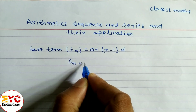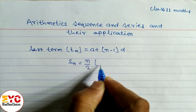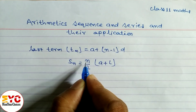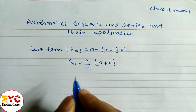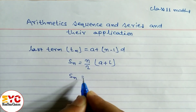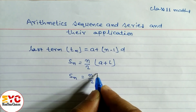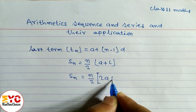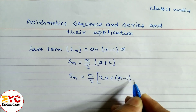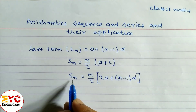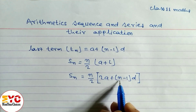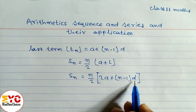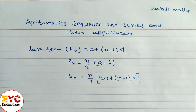After that, the Sn formula — sum of n terms — we have two formulas. First: Sn = n/2 × (a + l), where n is the number of terms, a is the first term, and l is the last term. Similarly, another formula: Sn = n/2 × (2a + (n-1)d), where d is the common difference.